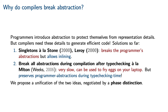While programmers introduce abstraction to protect themselves from representation details, compilers have the exact opposite needs — they need these representation details in order to generate efficient code. One solution is the use of singleton types à la Stone and Leroy: this allows inlining, but it breaks the programmer's abstractions and makes reasoning and programming more difficult. On the other hand, one can simply break all abstractions during compilation after type checking, in the style of Milton, which preserves programmer abstractions during type checking and produces very efficient code, but is very slow and can make your laptop get extremely hot. We propose a unification of these two ideas that puts the trade-off decisions into the hands of the programmer, negotiated by a phase distinction.